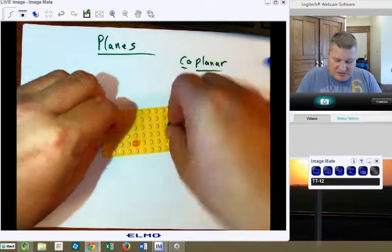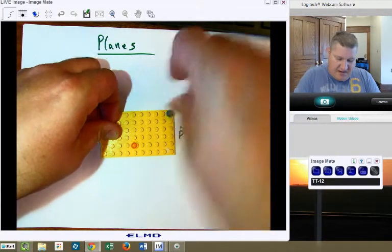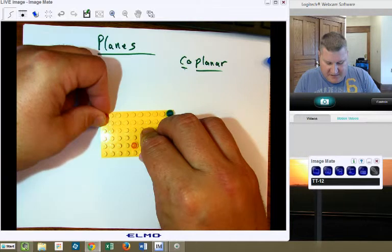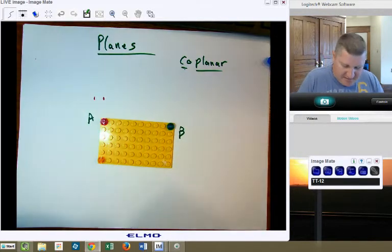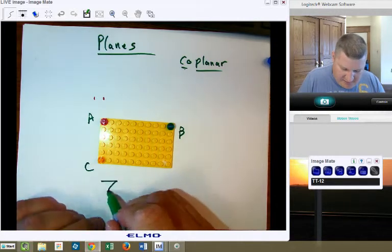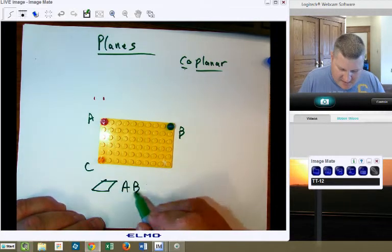So, we have each of these key points and they are co-planar. If I wish to, I can put these out at the edges and now I have A, B, C, and I have plane A, B, C.